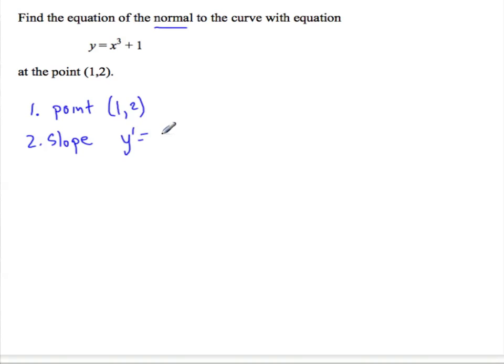So y prime equals 3x squared, and if I put in 1, I get 3 times 1, which is just 3. Now, I want the normal. If the question was find the tangent line, then I'm already ready to go. I have (1, 2) and a slope of 3. But I need the normal line,